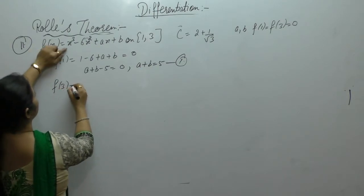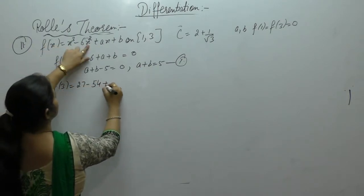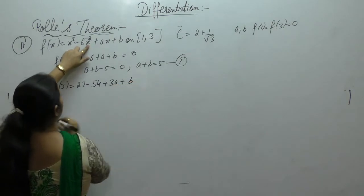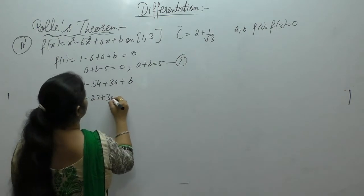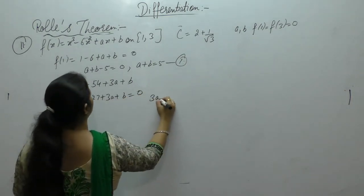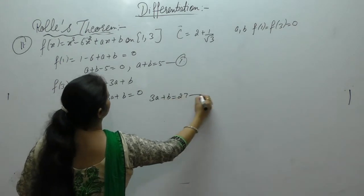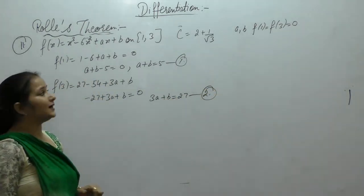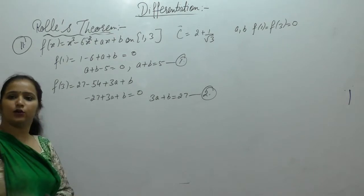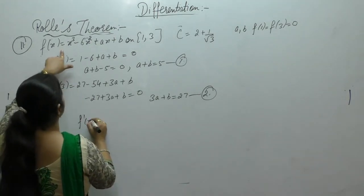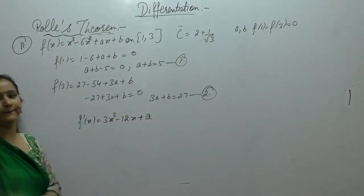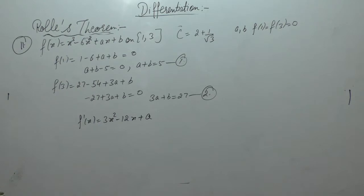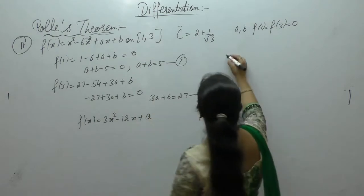From f(3) = 0: 27 - 54 + 3a + b = 0, so 3a + b = 27. Now since Rolle's theorem is satisfied, f'(x) = 3x² - 12x + a. We need to find the values of a and b from these two equations: a + b = 5 and 3a + b = 27.